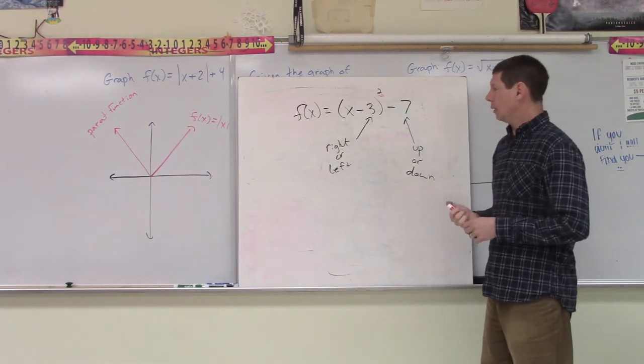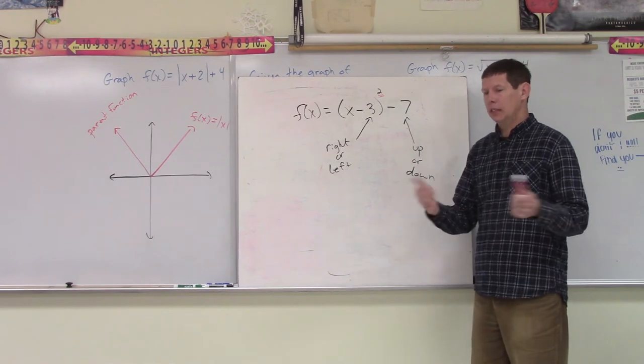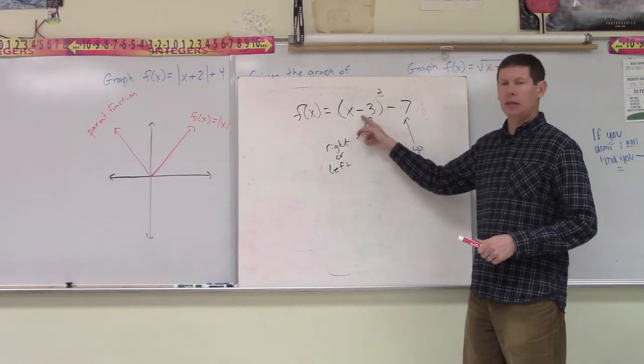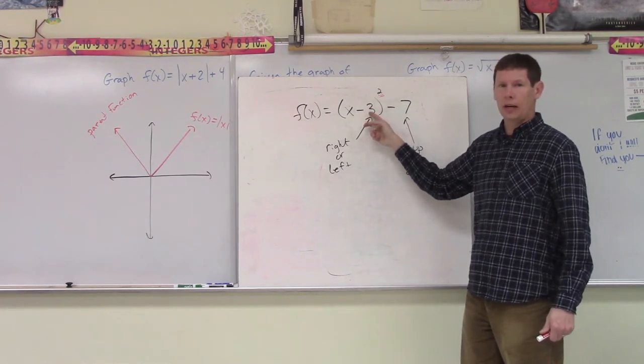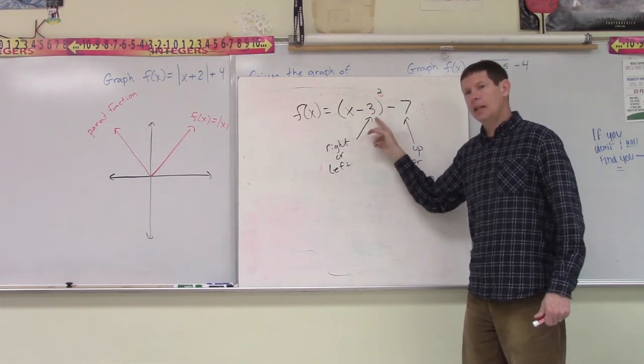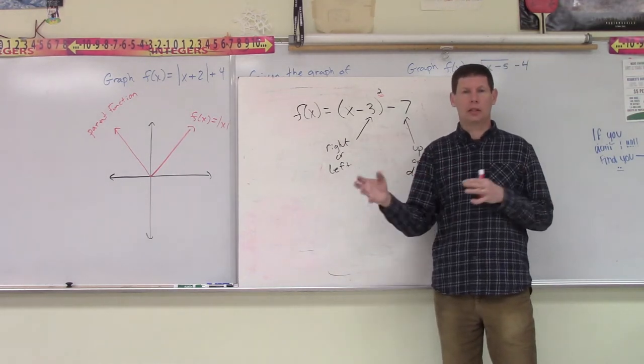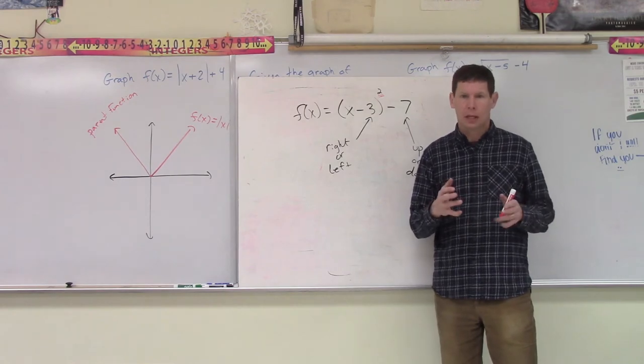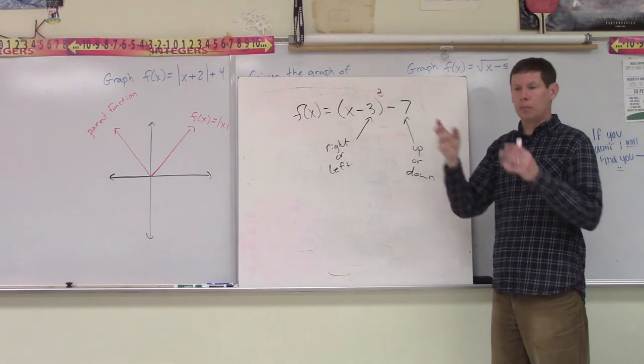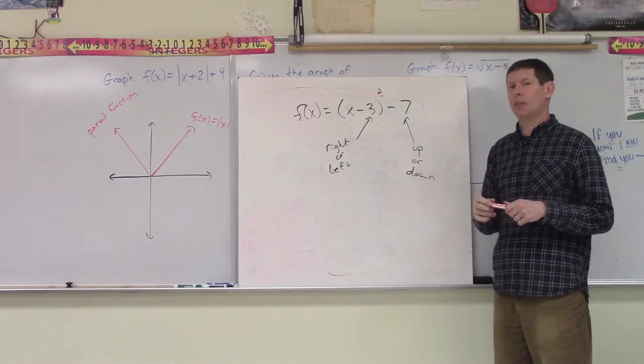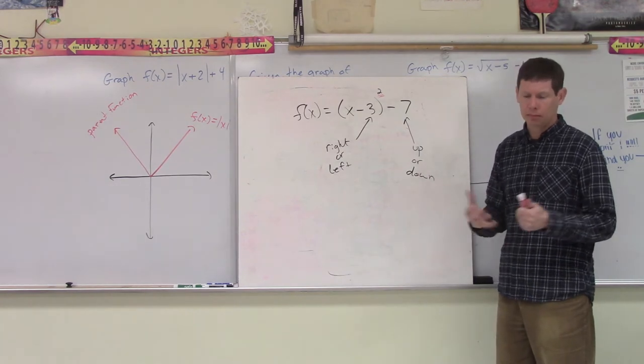And so what we said is if we took a function, say x squared, and all of a sudden, before we square that input value, we have a number added or subtracted to it, that number is going to be the number that's going to shift this parabola either to the left or to the right. Now, if we have a number that's added or subtracted to it after we apply that exponent of two to our function, that's going to be a vertical shift up or down. We call it a translation.